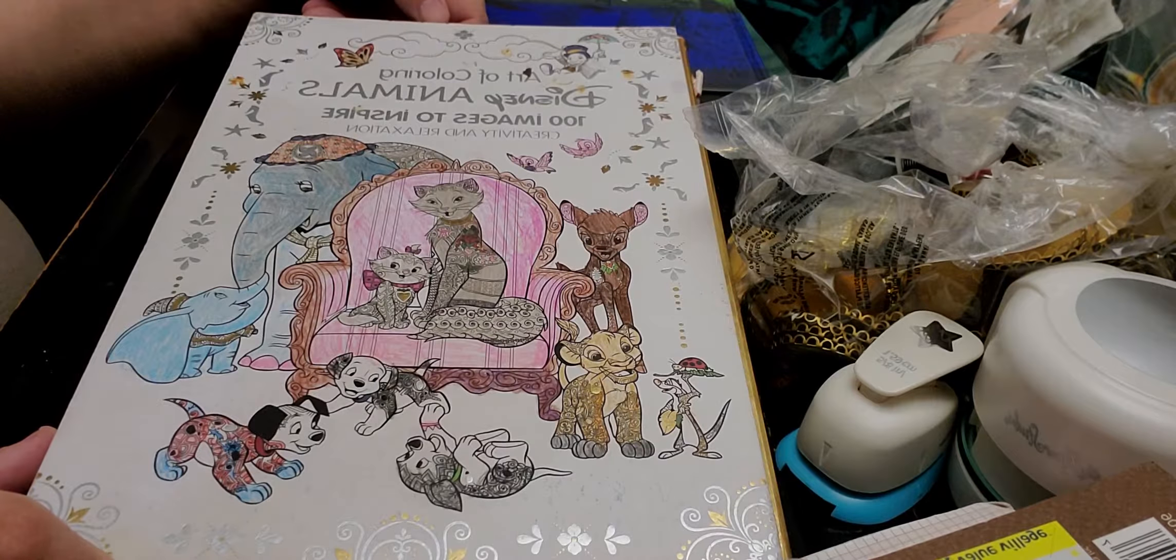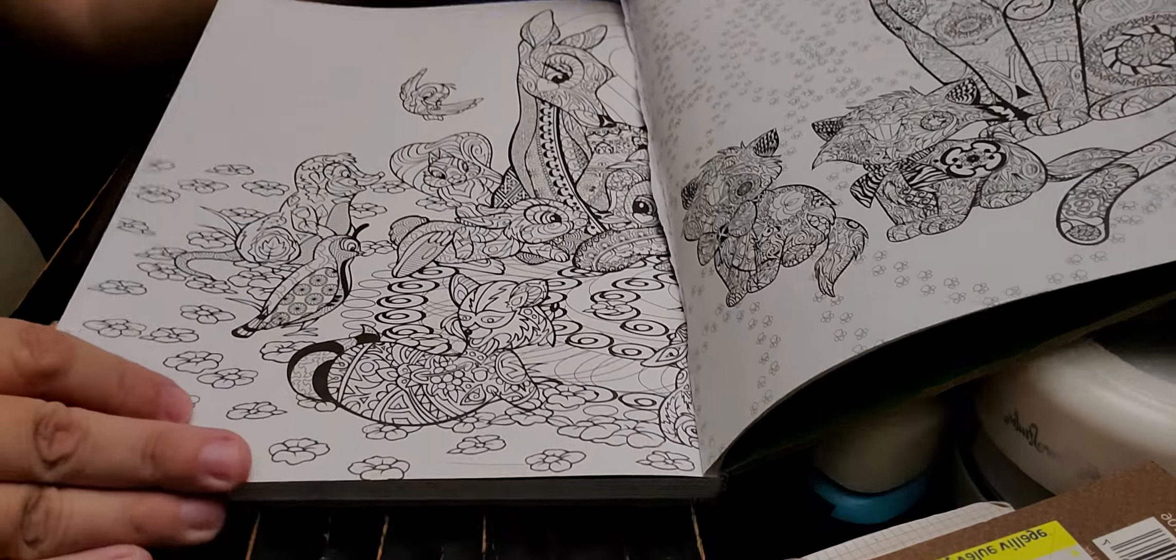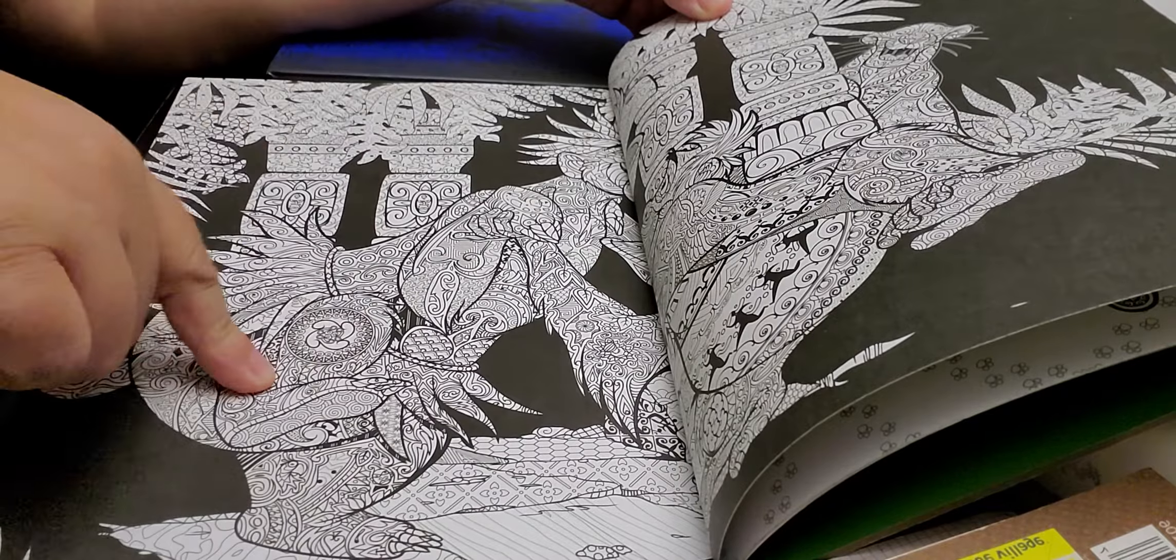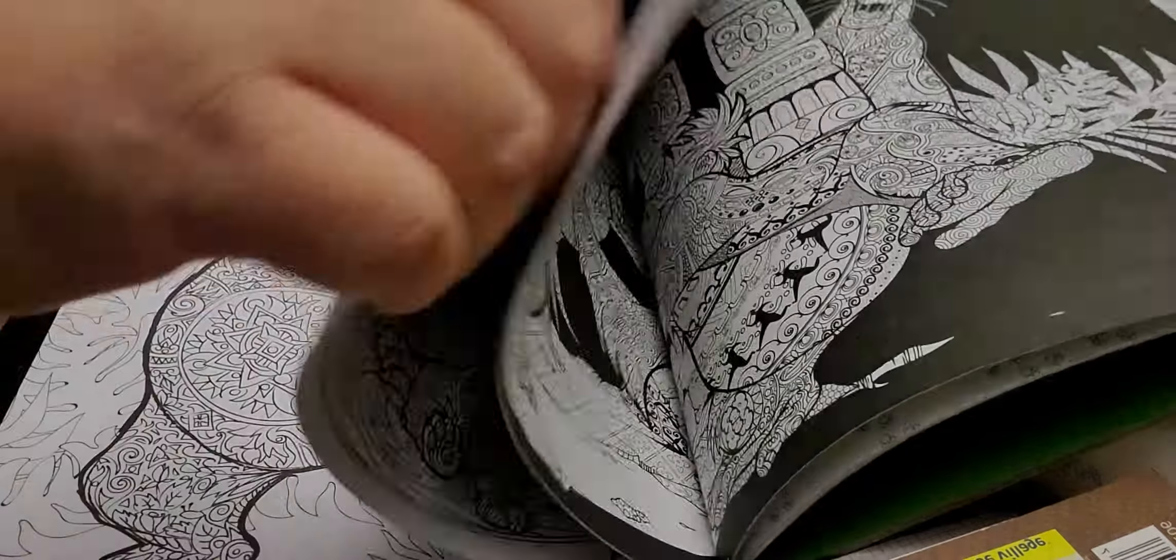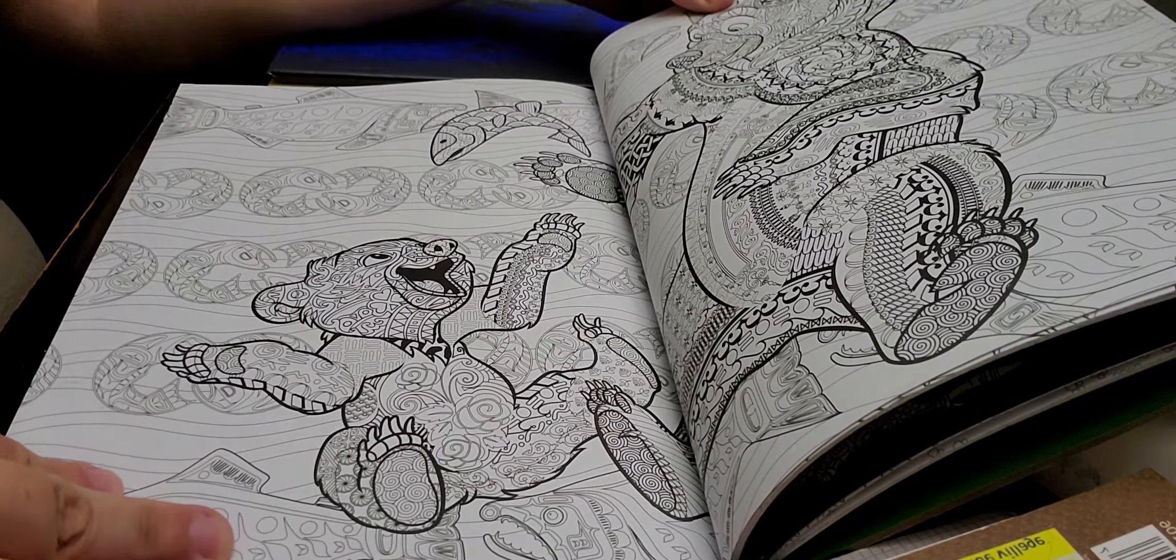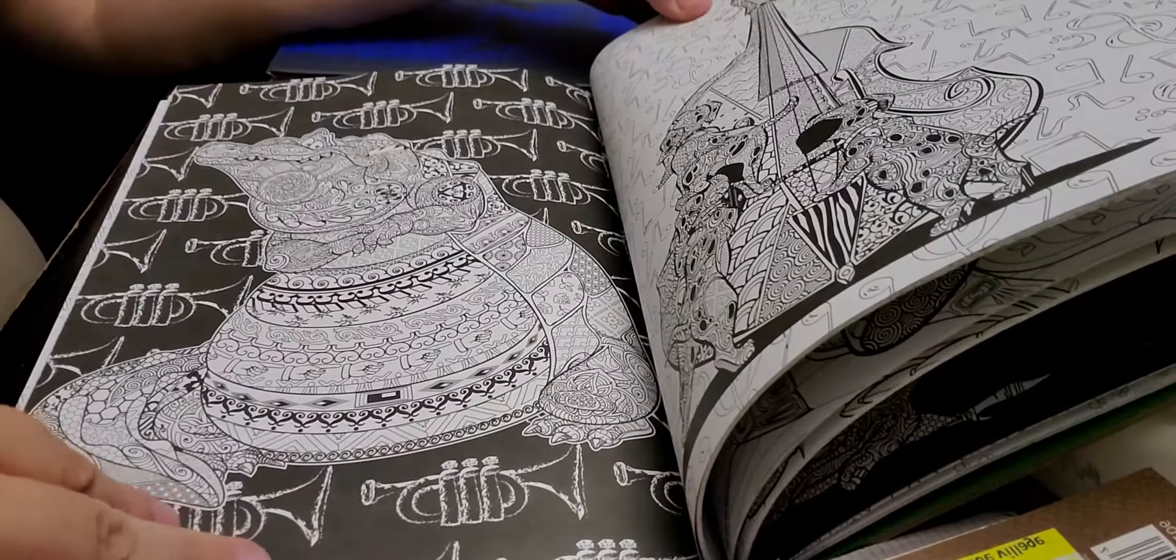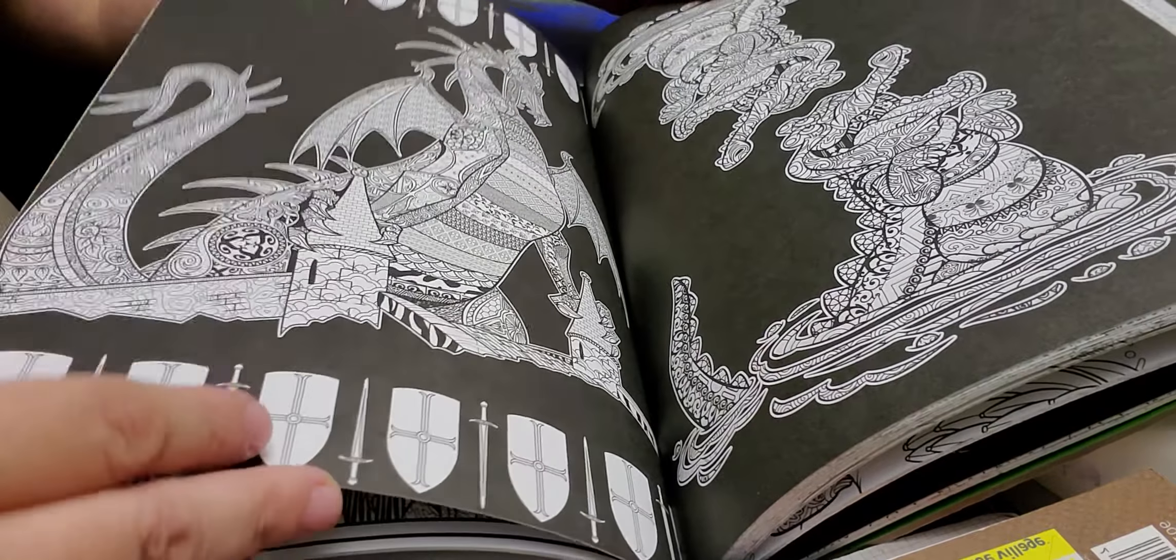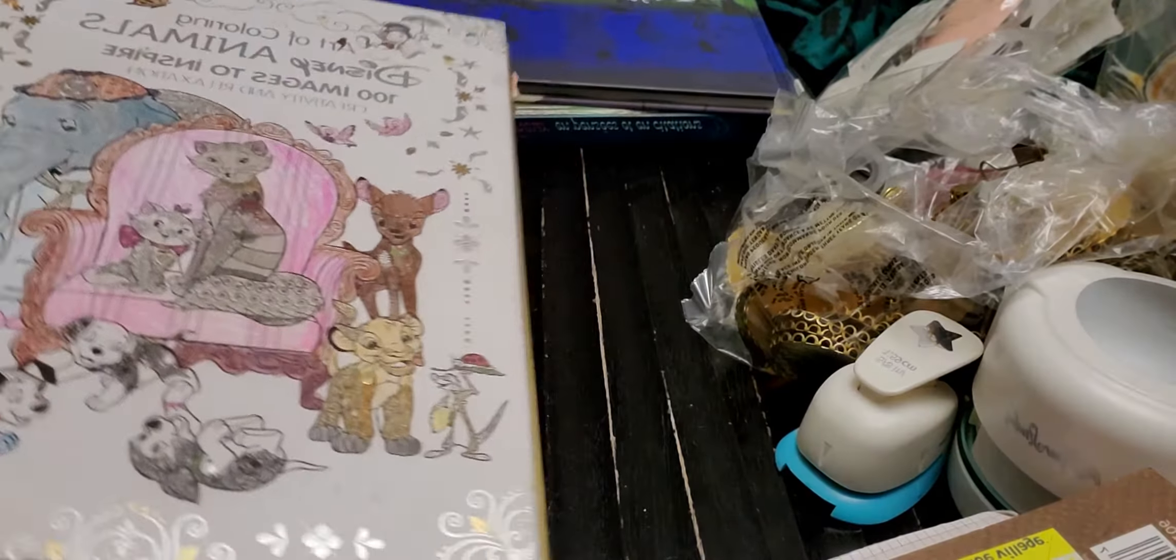Then I got this one, which is Art of Coloring Disney Animals, 100 Images to Inspire. So it's not bad, Bambi. King Louie, Bagheera and Baloo from the Jungle Book. The Tramp. Baloo and Mowgli. So pretty cool. I'm not sure, I think this could be Brother Bear, but really nice. There's Tick Tock. There he is, Tick Tock from Peter Pan. The Beast, Ursula. So pretty cool for these books.